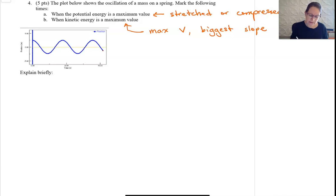My maximum kinetic energy is going to be here, where it's crossing the axis, so that's marked by x's. Where it's stretched or fully compressed will be at peaks or valleys, so potential energy max is at a peak or valley. We'll mark that with a dot.